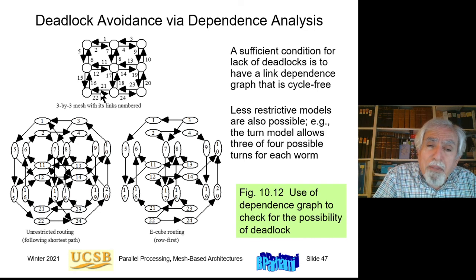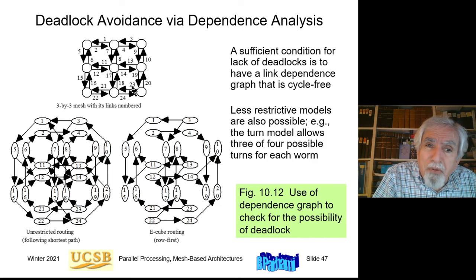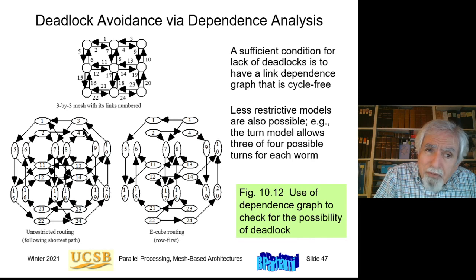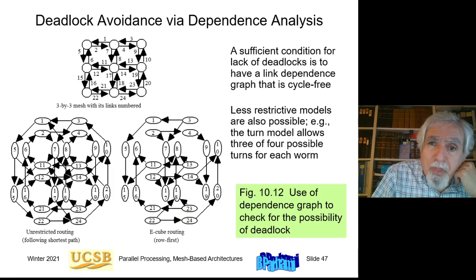For deadlock avoidance, here is a three-by-three mesh example with all communication channels numbered — bi-directional links with each direction numbered separately. From the connectivity graph of the mesh, we derive a dependence graph to reason about channel usage and avoid cyclic dependencies that lead to deadlock.